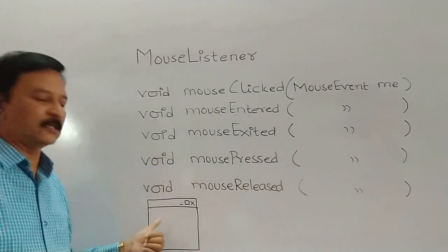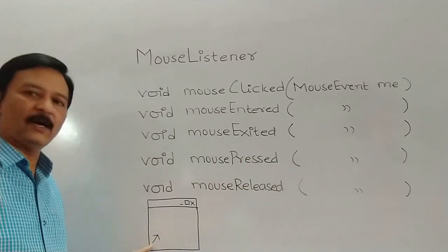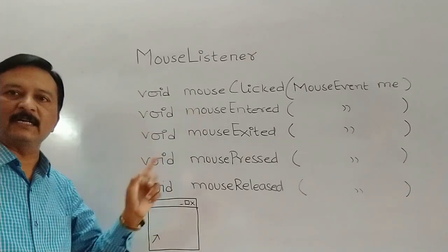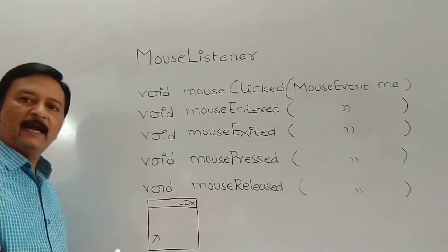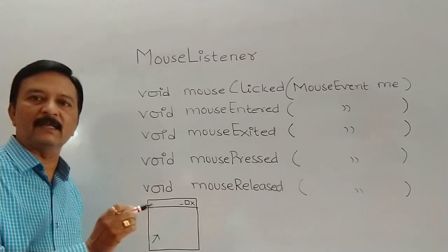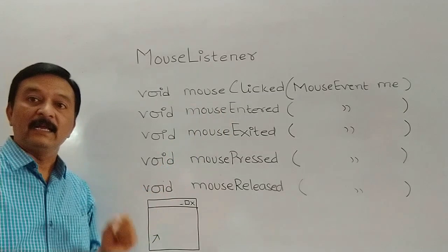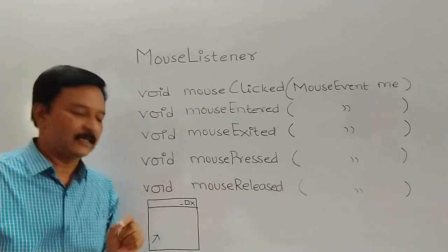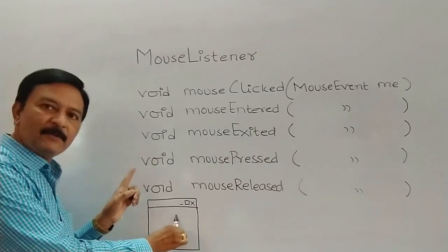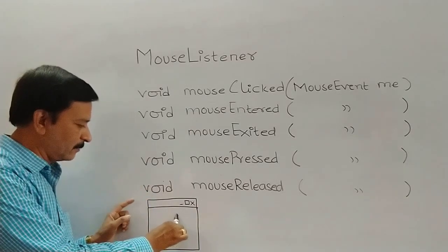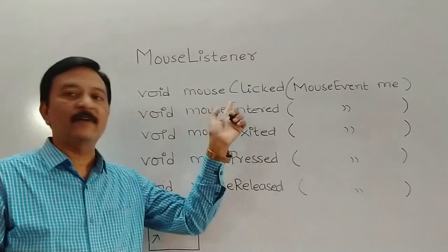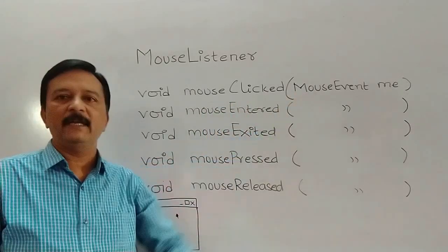Now let's observe these methods. Imagine a small form with a mouse pointer. The first method is mouseClicked. If you click the mouse at one particular point — meaning you press and then release at the same point — then that is called a mouseClicked event and the mouseClicked method is executed.